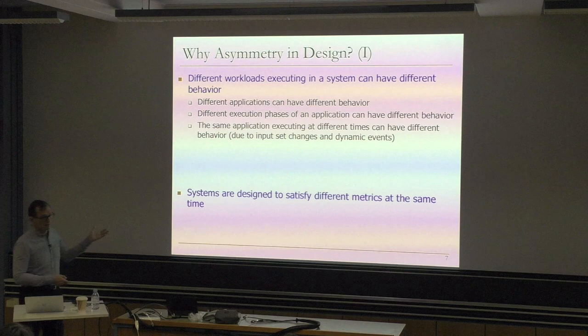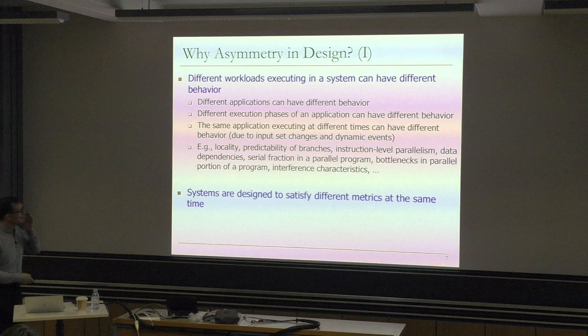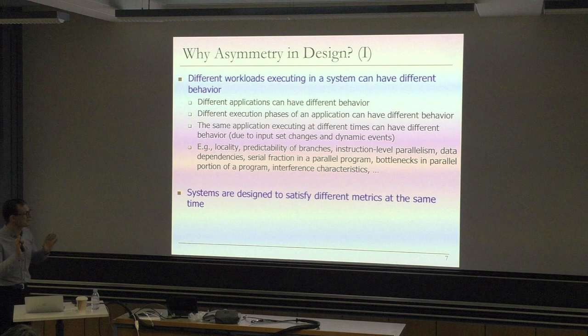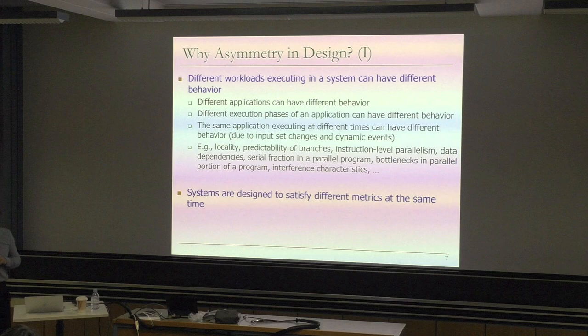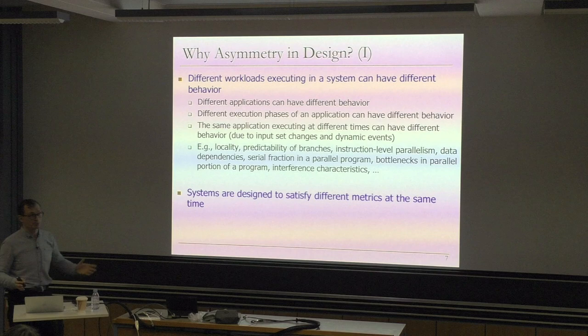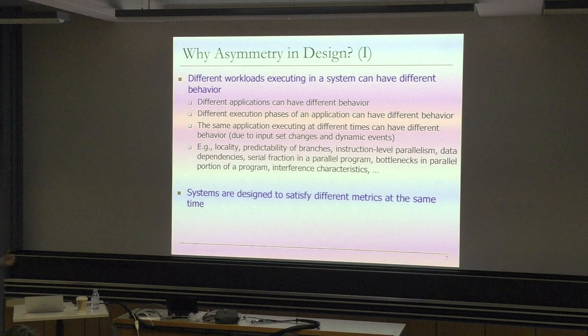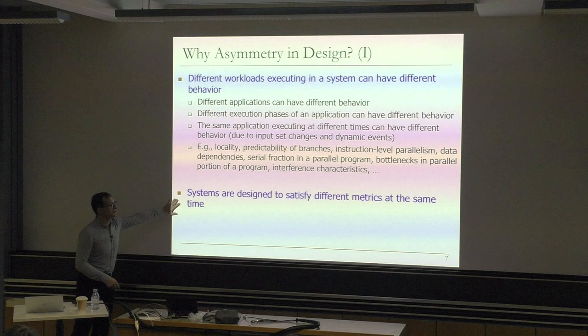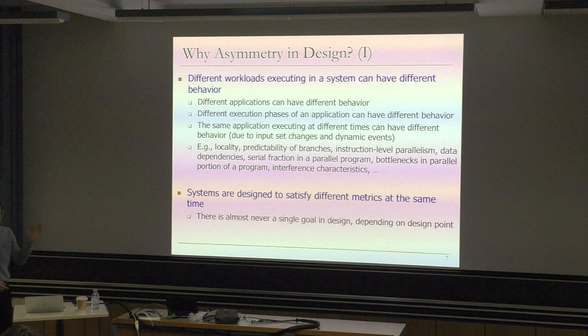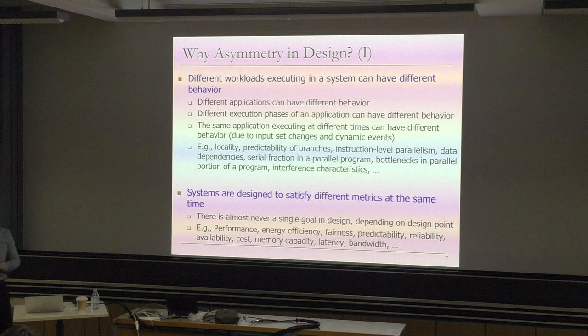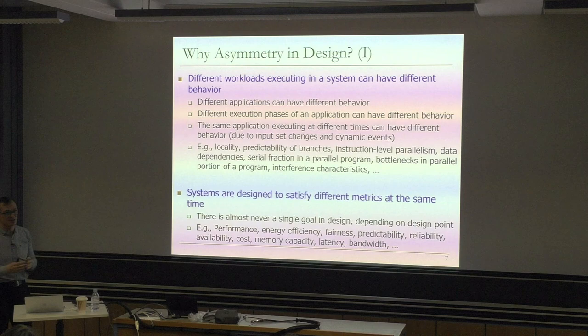Dynamic events also - whether you have good or bad locality, whether you get a miss in the cache, whether you're interacting with the user. Locality, predictability - there are a lot of examples. For example, serial fraction versus parallel portions of a program. You have a parallel program, but some parts are serial because the programmer couldn't parallelize them. You need to handle that very differently from the parallel part. At the same time, systems are designed to satisfy different metrics simultaneously - there's almost never a single goal, and you almost always do multi-objective optimization.